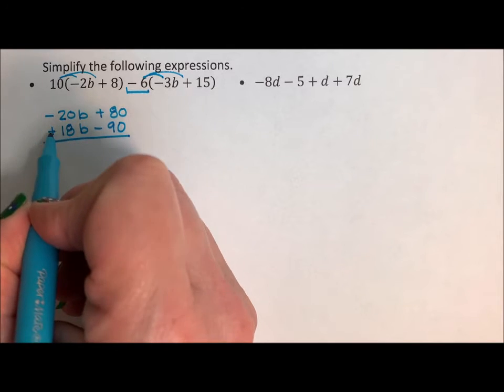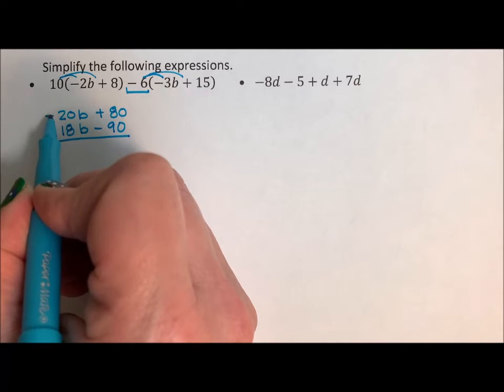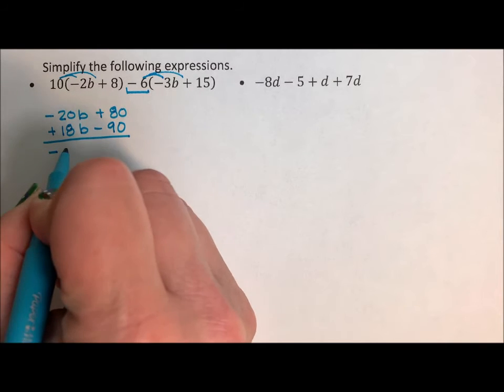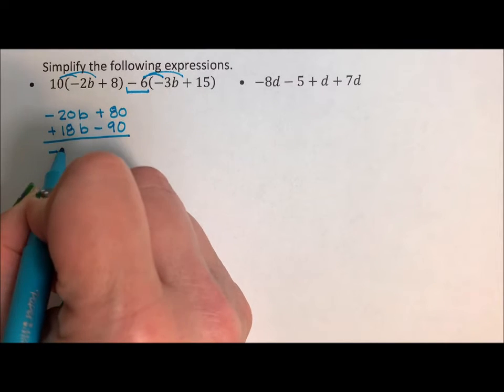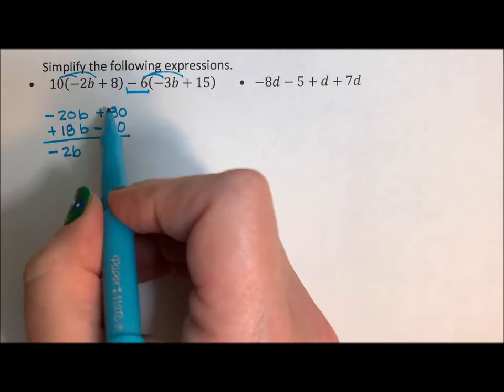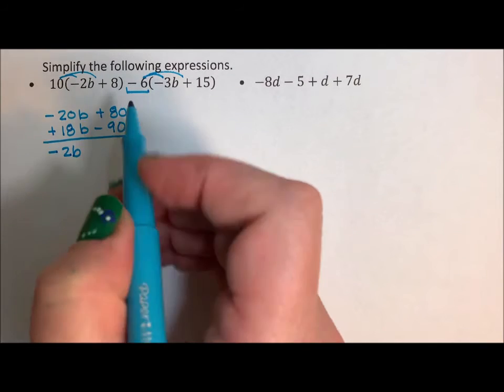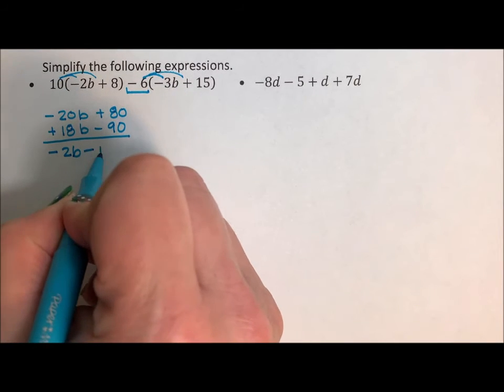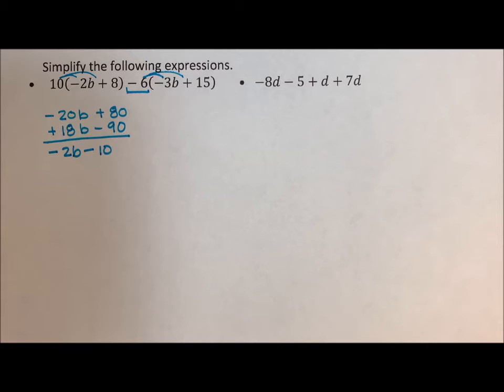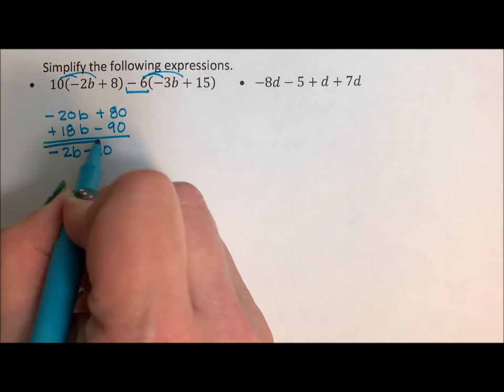Negative 20 plus 18, there are more negatives, so it's going to be negative. The negatives are going to win the battle. Negative 2b, then 80 minus 90, the negatives are going to win again by 10. Negative 2b minus 10 is my final answer.